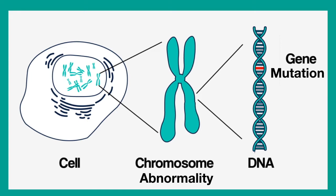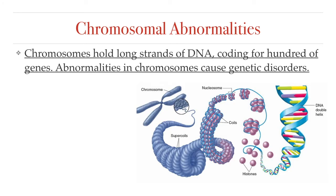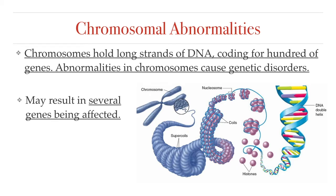For this lesson, we will focus on what happens when something goes wrong with the chromosomes. We call these types of genetic disorders chromosomal abnormalities. As you learned in an earlier lesson, chromosomes are the structures in the cell that help organize those long strands of DNA. Each chromosome holds DNA that can code for hundreds, if not thousands, of genes. As a result, errors that happen when the chromosomes are involved can affect many genes at once.